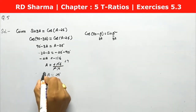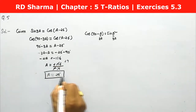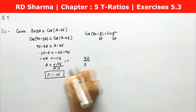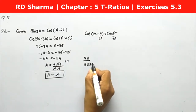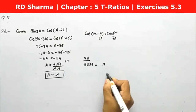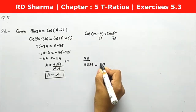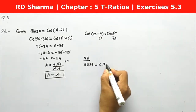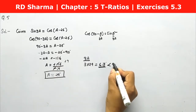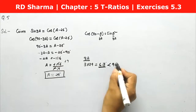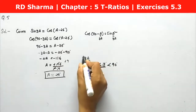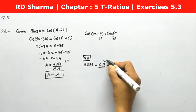So a equals 29 degrees. Now we verify the condition that 3a is an acute angle. Putting a equals 29 degrees, we get 3a equals 3 times 29 equals 87 degrees. Since 87 degrees is less than 90 degrees, it is indeed an acute angle. So 3a is confirmed to be an acute angle.